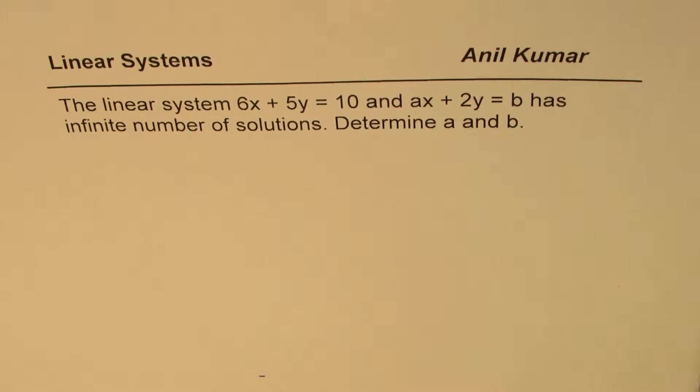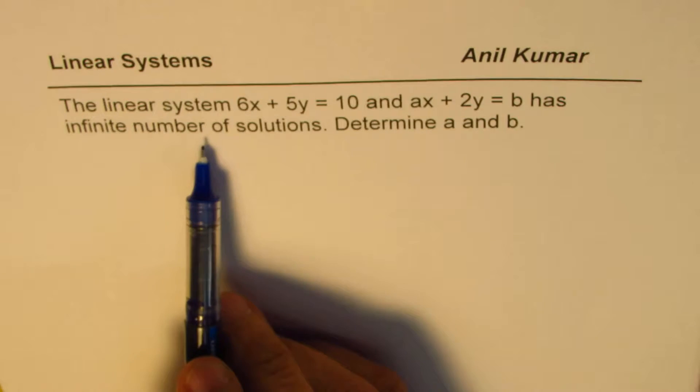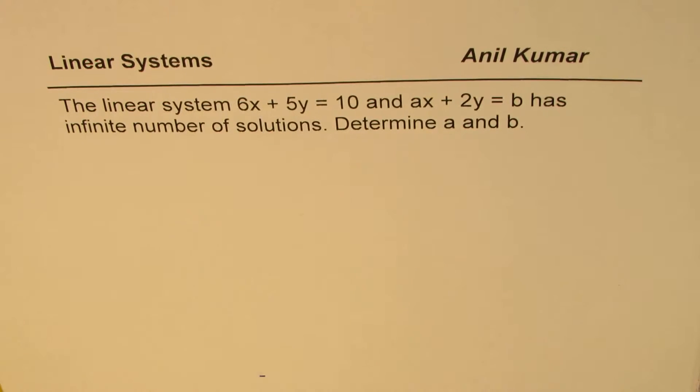I'm Anil Kumar sharing with you an excellent question on linear systems. The question is: the linear system 6x plus 5y equals 10 and ax plus 2y equals b has infinite number of solutions. Determine a and b.